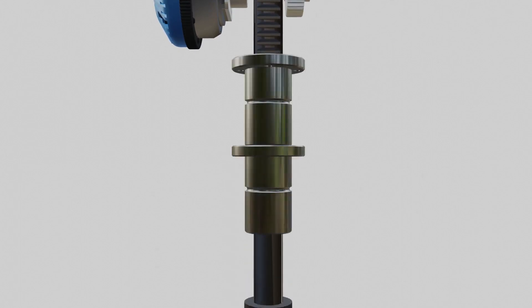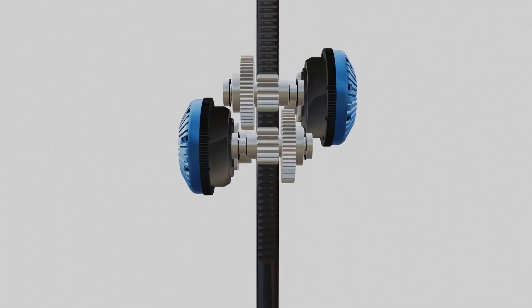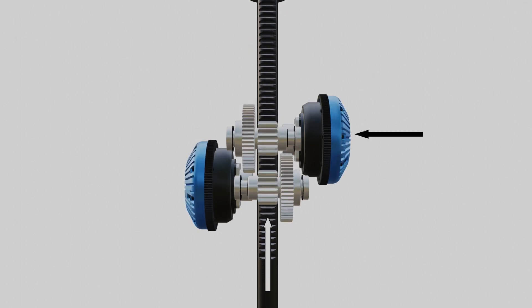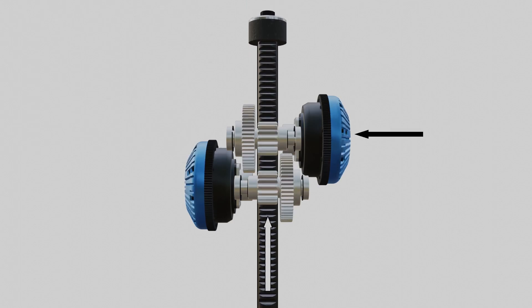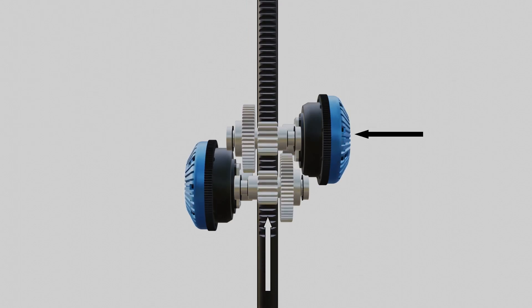This rod is supported by two ball splines that guide it with low friction. Each clutch can only push the rod in one direction. When the right clutch is engaged, the rod is pulled up. Inversely, when the left clutch is engaged, the rod is pushed down.